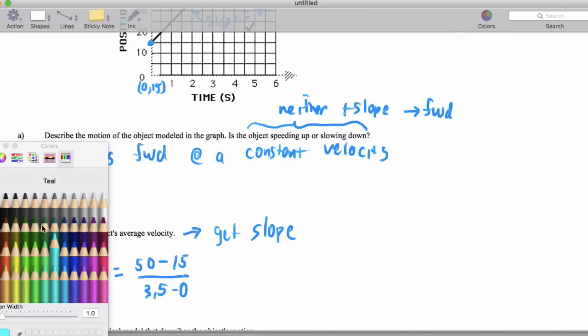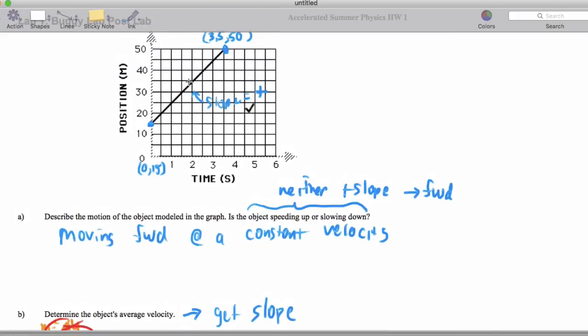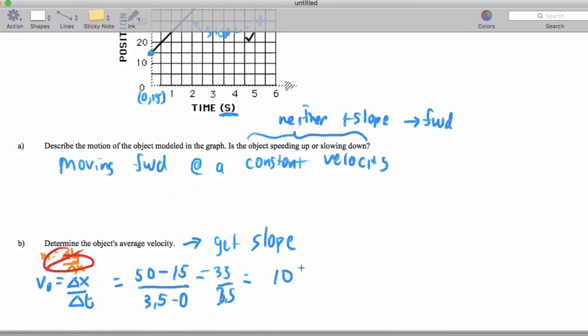And when I do that, what I'm going to end up getting is I will end up getting 35 over 3.5. And so my slope ends up being 10. Now the units, when you get the units of the slope, you take the unit of the rise over the units of your run. So that's going to be 10 meters per second.